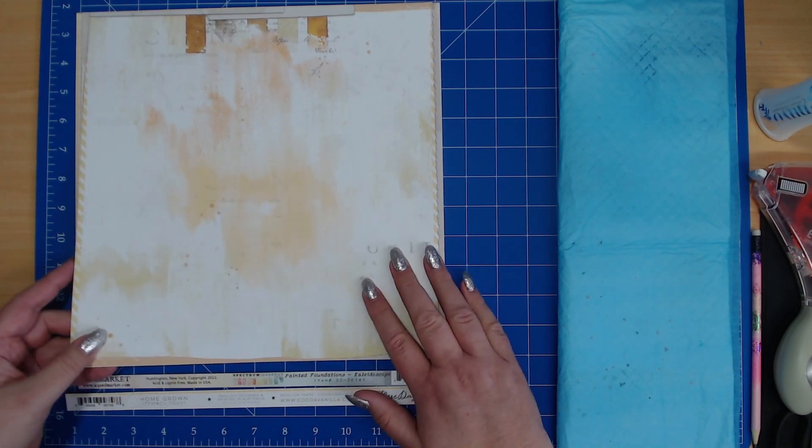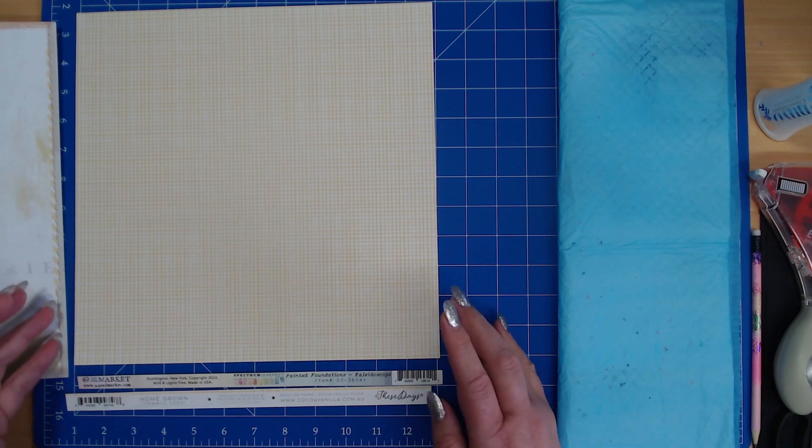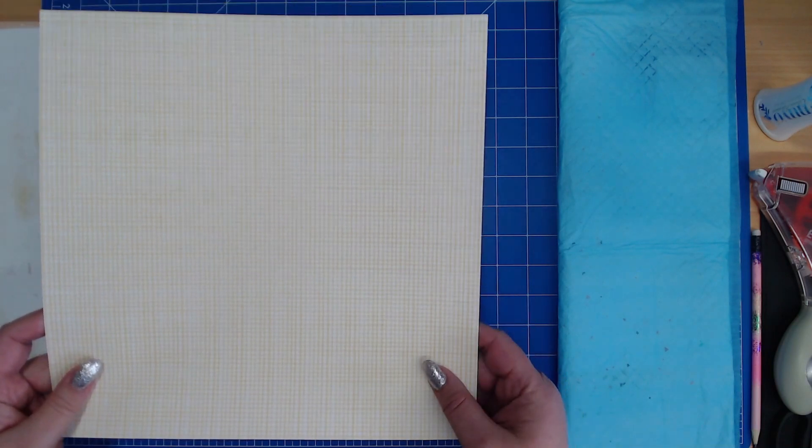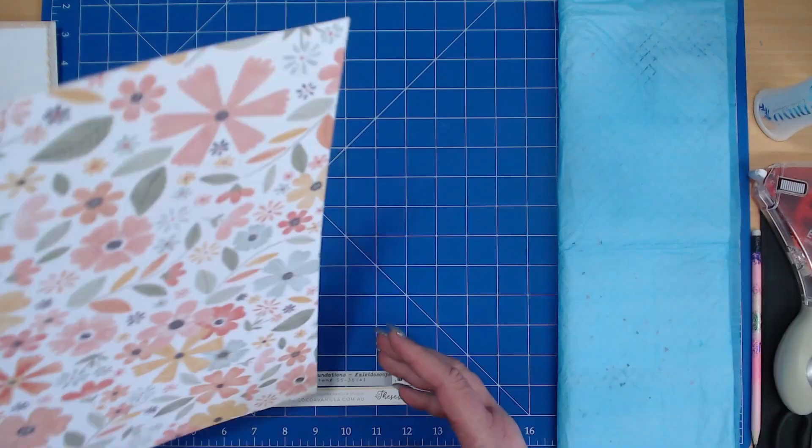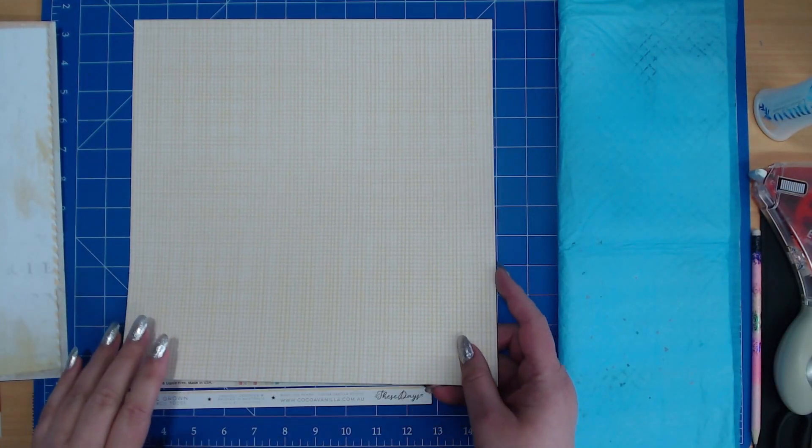So I'm going to be using this yellow side. And then also from the kit I'm going to be using the Coco Vanilla These Days Homegrown Paper. It's got beautiful floral on the back. I'm actually going to use this check just to back my photos.